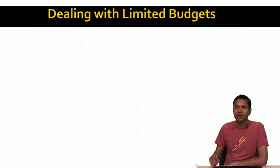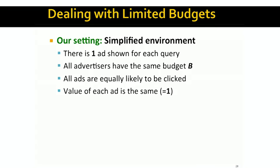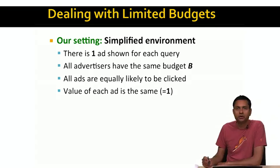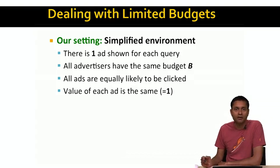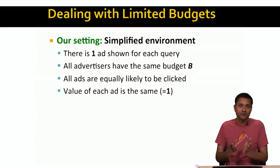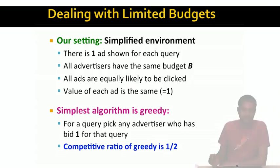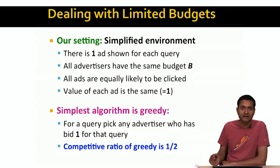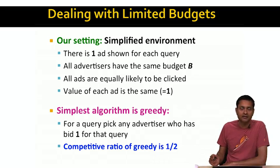So the question is, how do we deal with this issue of limited advertiser budget — that we cannot show an ad from an advertiser whose budget has been exhausted? Let's study the problem in a simplified version. The simplified version has only one ad shown for each query, and all advertisers have the same budget B. We're also going to assume that all ads are equally likely to be clicked and all have the same value of one — that is, expected revenue from each ad (the product of click-through rate and bid) equals one. The simplest algorithm is the greedy algorithm, which picks any advertiser who has bid on a query when that query arrives.